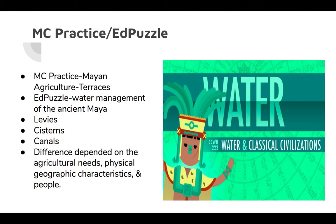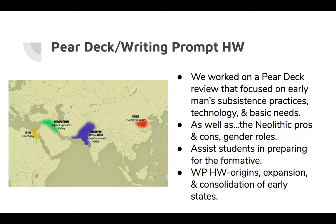We talked about the differences in their activities around water gathering and water management. Even though you had city-states within the Mayan Empire that were very close to each other, the differences really depended on the various agricultural needs and the physical geographic characteristics. The people within those cities would have different methods because of that.